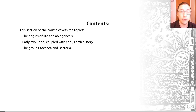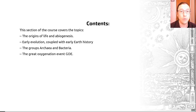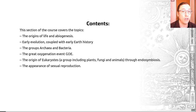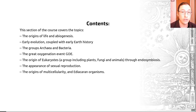We'll introduce the groups Archaea and Bacteria, what these are and a little bit about their biology, and then we'll look at a major event in Earth history called the Great Oxygenation Event or GOE. We'll look at the origin of more complex organisms called eukaryotes, and also the appearance of a life cycle found within this group that is sexual reproduction. We'll introduce the origins of multicellularity and a group of organisms that are arguably some of the first macroscopic features to display this trait.